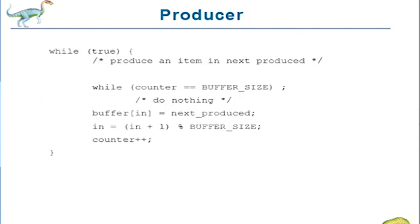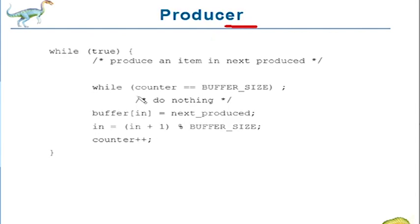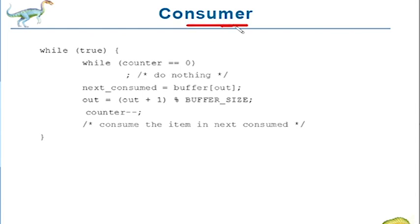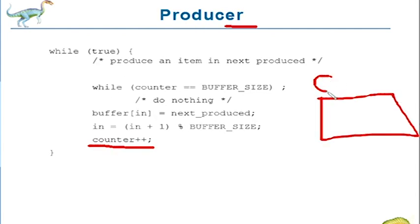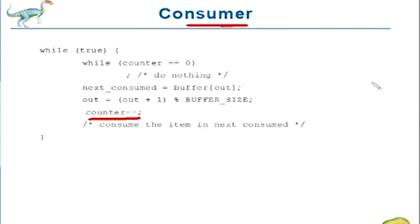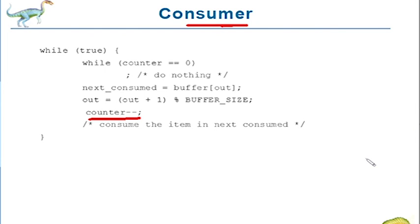In order to establish the need for this even further, let's look at an example. We have two processes: one is called the producer process and the other is called the consumer process. The producer process is trying to increment the value of the counter variable, and the consumer process is trying to decrement it. Both of them are trying to modify this shared variable counter.